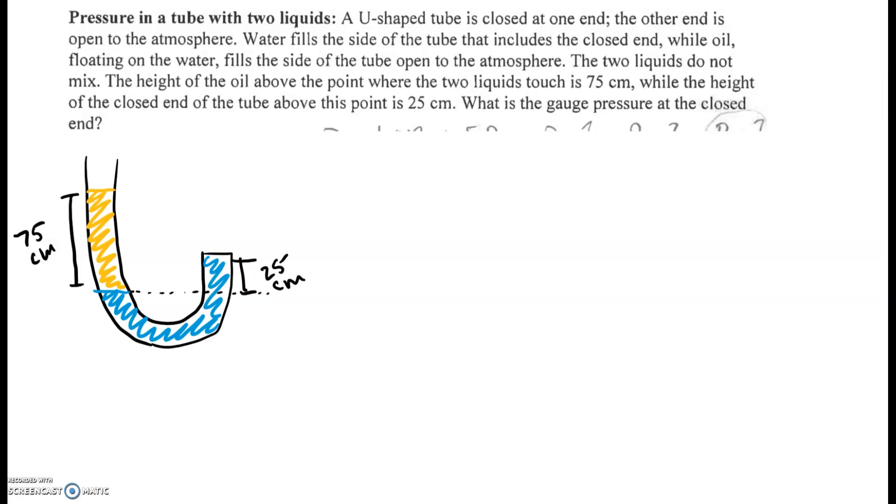Water fills the side of the tube that includes the closed end, while oil floating on the water fills the side of the tube open to the atmosphere. The two liquids do not mix. The height of the oil above the point which the two liquids touch is 75 centimeters, while the height of the closed end of the tube above that point is 25 centimeters. What is the gauge pressure at the closed end?